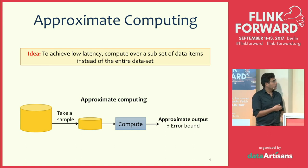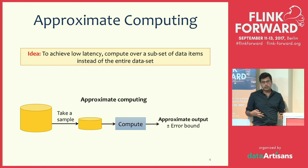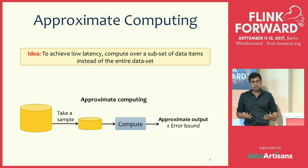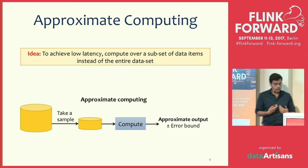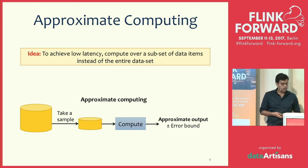In approximate computing, we take a sample from the entire data and compute only on that sample, producing an approximate output with error bounds. This gives users an estimate of how far the approximate answer is from the exact answer, enabling meaningful decisions. Importantly, by varying the amount of sample we pick, the sample size helps us make the trade-off between latency and the resources needed for computation.